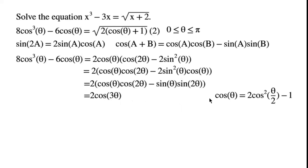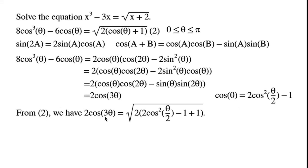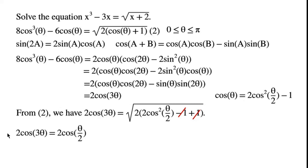Using the double-angle formula, cosine theta equals 2 cosine squared (theta over 2) minus 1. From the equation, we have 2 cosine 3 theta equals root of 2 times (2 cosine squared (theta over 2) minus 1 plus 1), and the minus 1 and plus 1 cancel. So 2 cosine 3 theta equals root of 2 times 2 cosine squared (theta over 2), giving us cosine 3 theta equals cosine (theta over 2).